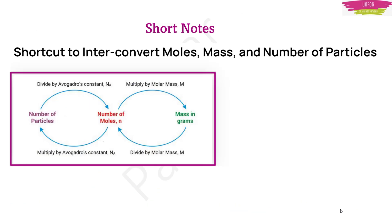Now, what are short notes? Here is an example for chemistry aspirants — how to do interconversion between moles, mass, and number of particles. Instead of writing one big paragraph, just make a small diagram. If you want to convert number of particles into moles, divide by Avogadro's number. To convert moles into mass in grams, multiply by molar mass. To convert mass in grams into moles, divide by molar mass. To convert moles into number of particles, multiply by Avogadro's constant. One small diagram gives you four types of conversions, and at least one question will surely come from this part.